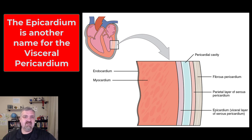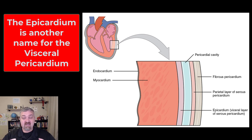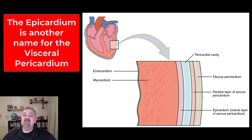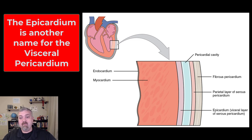Then we have the visceral and parietal pericardium — we covered these back in our first unit together. The parietal pericardium would be the layer lining the cavity the heart is in. The visceral pericardium, which does have a second name — the epicardium — means the same thing as visceral pericardium. That's the lining that's on the heart itself; it's actually part of the outside of the heart wall.